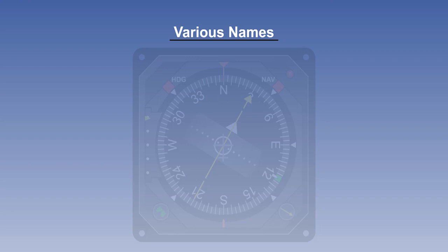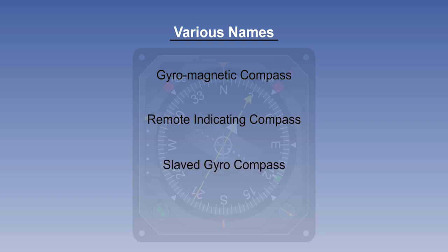The gyromagnetic compass is known by several names. It can be referred to as the gyromagnetic compass, remote indicating compass, slaved gyro compass, or magnetic heading reference system. They all mean the same thing.